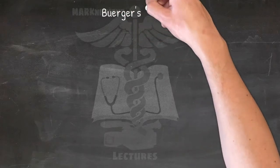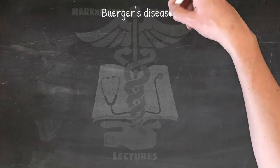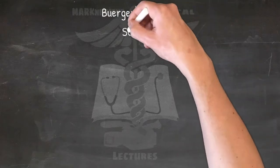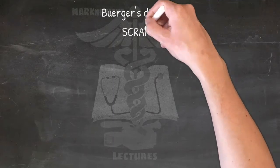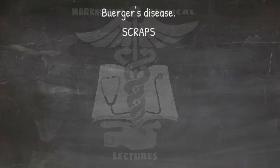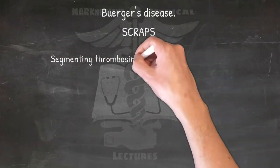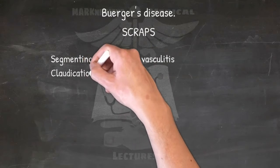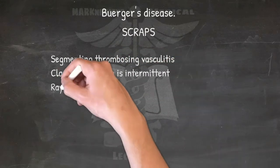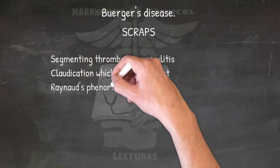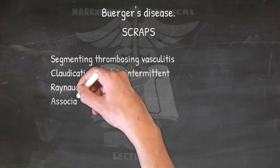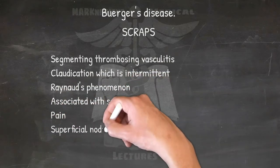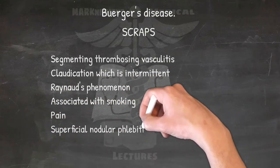Features of Buerger's disease: BURGER SCRAPS — Segmenting thrombosing vasculitis, Claudication (intermittent), Raynaud's phenomenon, Associated with smoking, Pain even at rest, and Superficial nodular phlebitis.